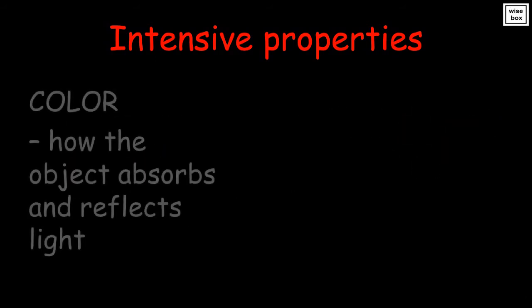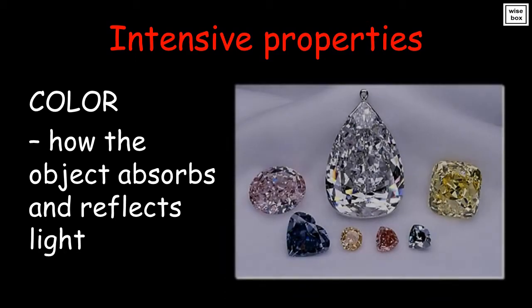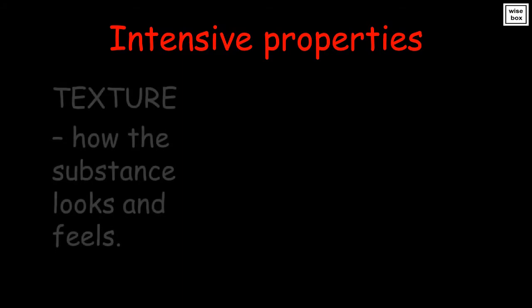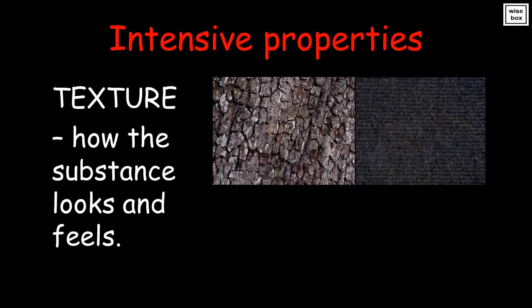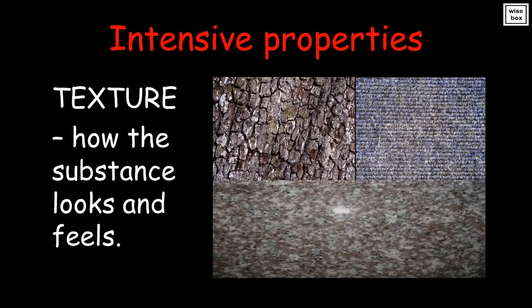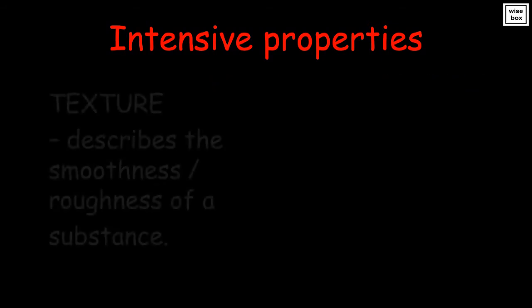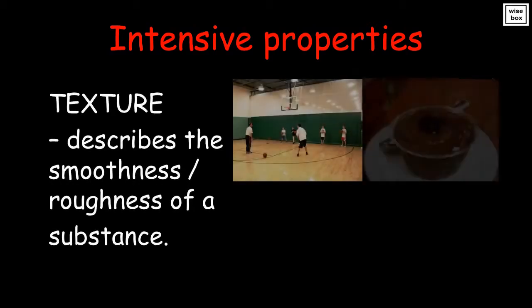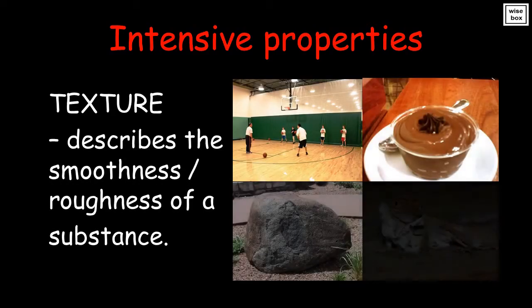Color describes how the object absorbs and reflects light. Color also describes the smoothness or roughness of a substance.